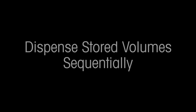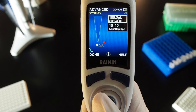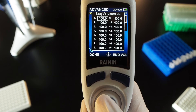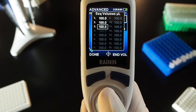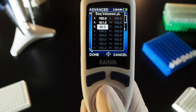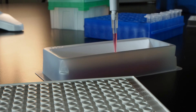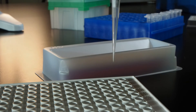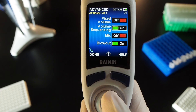Dispense stored volume sequentially. Dispense volumes in a series without returning to the list of volumes between each cycle. In options, joystick to volume sequencing and press the joystick in to turn it on. Press done. Joystick right to go into settings. With the top box lit, press the joystick in. A list of sequence volumes opens. Joystick to the last volume you want to dispense and press end volume. Use the joystick to go to different volumes. Press it to select a volume and adjust by moving left, right, up or down. When volumes are set, press done. Press done again to begin the volume sequencing. Joystick up to aspirate and down to dispense. Repeat through each volume in the sequence. Press options and press the joystick in to turn off volume sequencing.